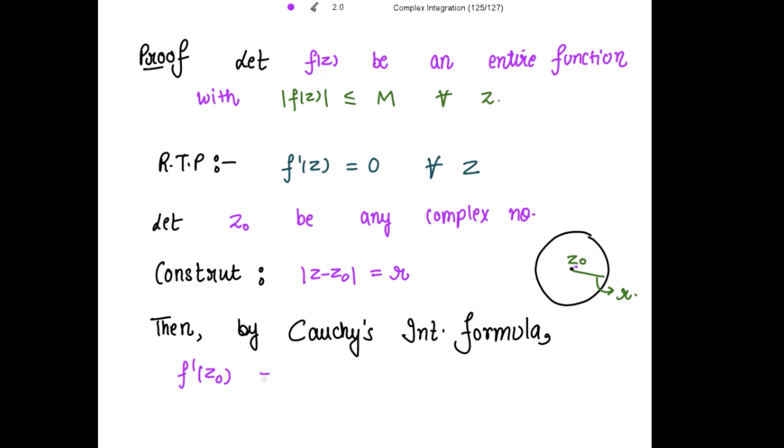At this z_0 is equal to 1 over 2πi integral over C of f(z) divided by (z minus z_0) to the power 2, dz.